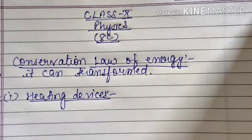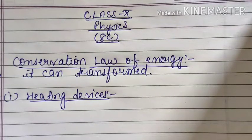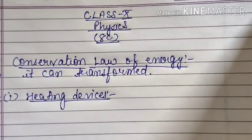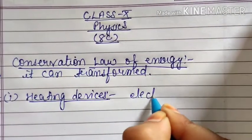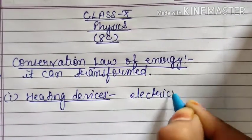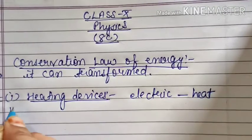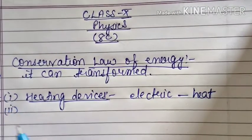Some transformation examples are given here, all of which we have already studied in the 2nd chapter. The first example is heating devices — your electric heater, electric iron. In all these things, electrical energy is converted into heat energy.